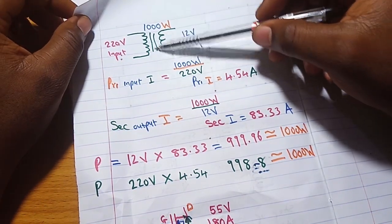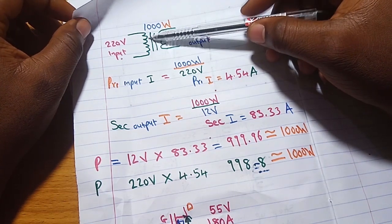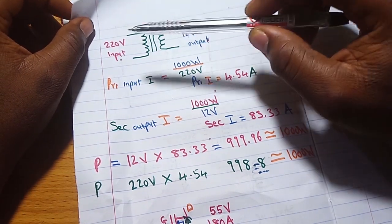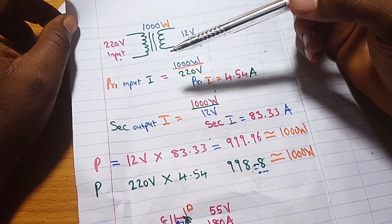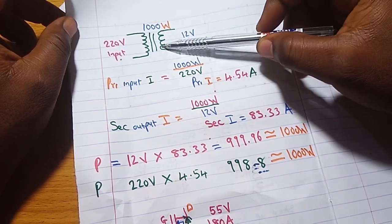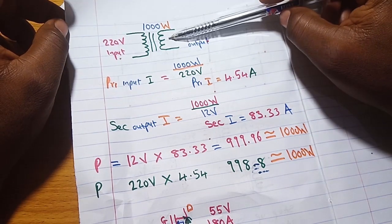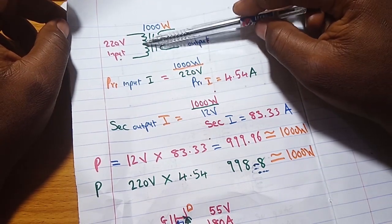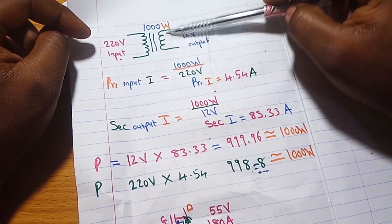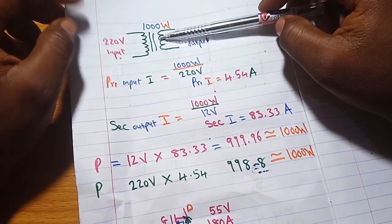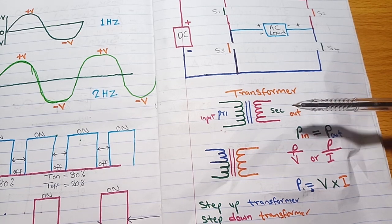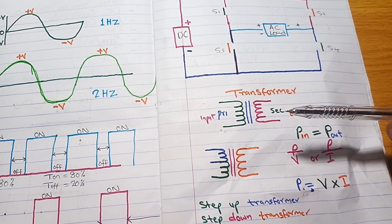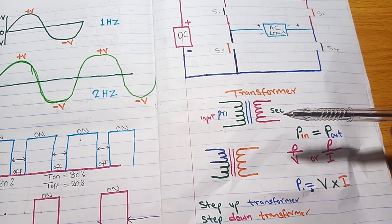If you want to calculate the wattage capacity of your inverter, it depends on the transformer and the MOSFET. In our next video, I will show you how to calculate for the MOSFET. I've shown you the transformer side. We will also talk about how to replace the switch with the MOSFET and the ratings you should consider when designing an inverter. I hope this video was helpful — please like, share, and subscribe. Thank you guys, and see you in the next video.